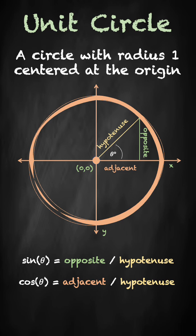But the interesting thing about a unit circle is that the hypotenuse is always going to have length 1 since it's the radius of the circle.